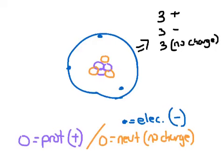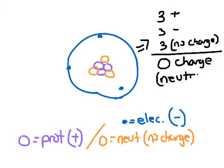Okay, if I add all that up together, that's three plus plus three minus plus three zero is equal to zero charge. Okay, so this is a neutral atom. This particular one here is a neutral atom because I have three positives, three negatives, and since the neutrons have no charge, they don't change it one way or another.